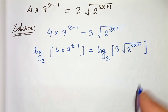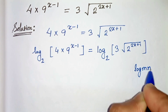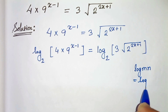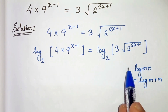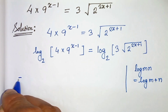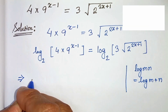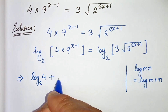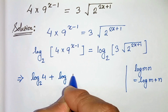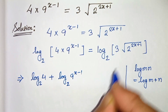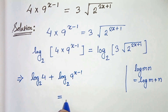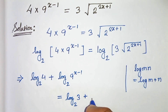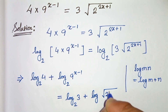Now we know that log of m times n can be written as log m plus log n. Applying this here we get: log of 4 with base 2 plus log of 9 to the power x minus 1 with base 2 equals log of 3 with base 2 plus log of root under 2 to the power 2x plus 1 with base 2.